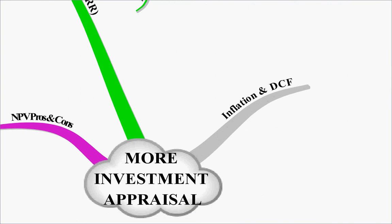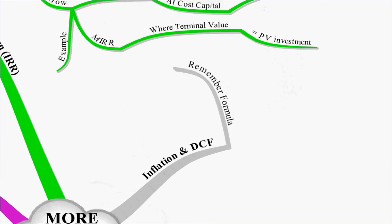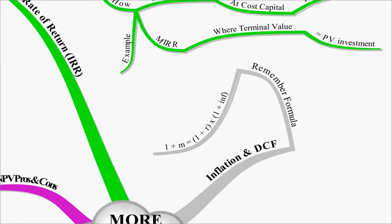So, inflation then, related to discounted cash flow, just a few exam tips. Remember the formula, 1 plus m, which is our money, our nominal rate, equals 1 plus r, times 1 plus inflation, 1 plus our real rate, times 1 plus our inflation rate.